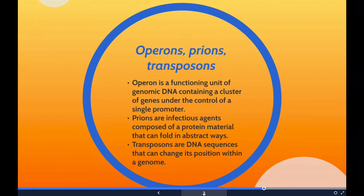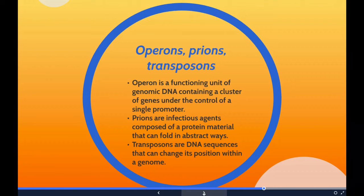Prions are infectious agents composed entirely of protein material that can fold in multiple structural ways. At least one of these conformations is transmissible to other prion proteins, leading to disease in a manner comparable to the spread of viral infection.